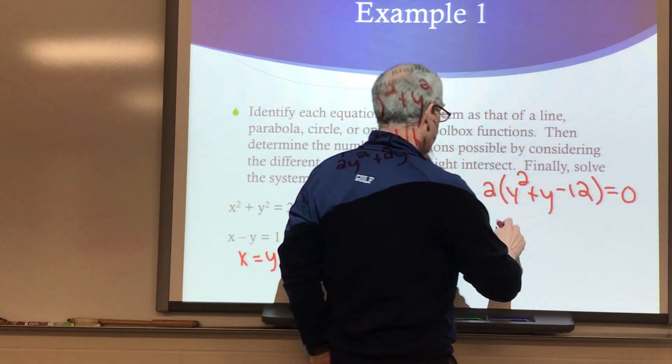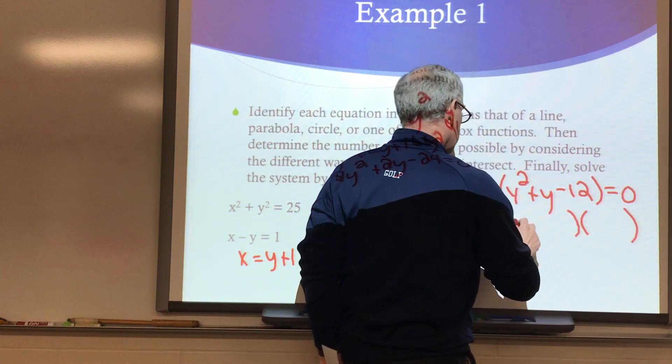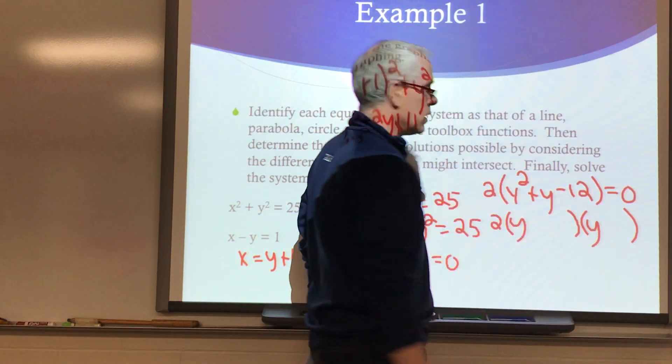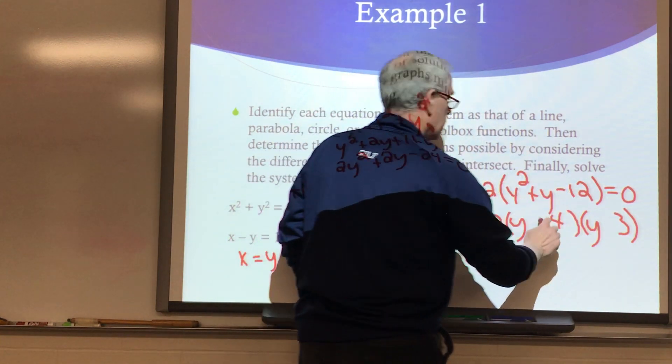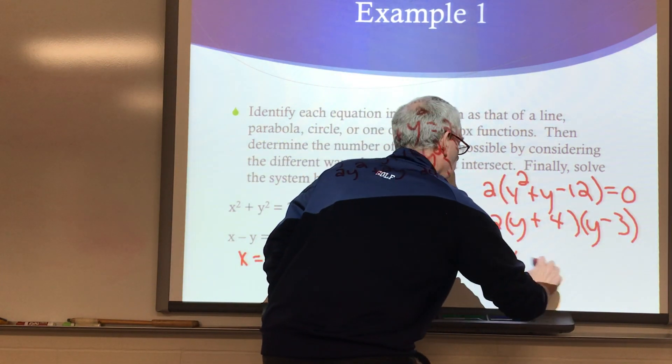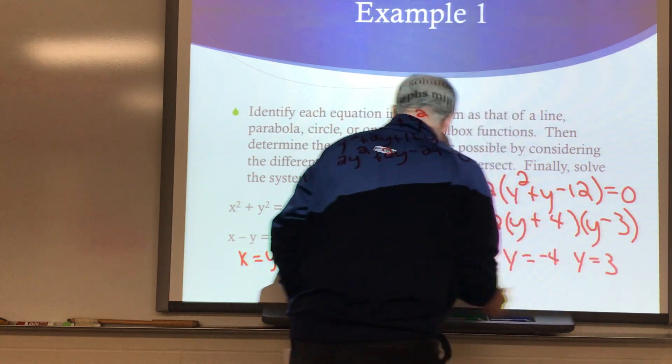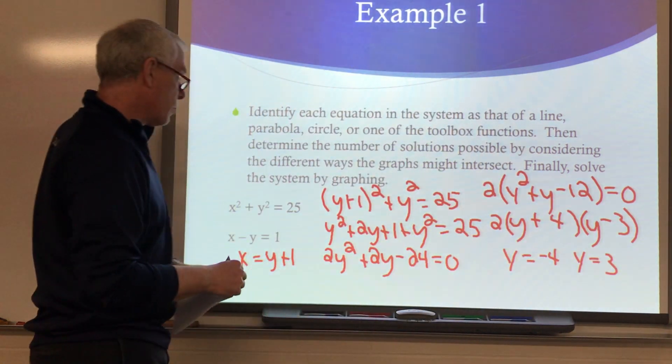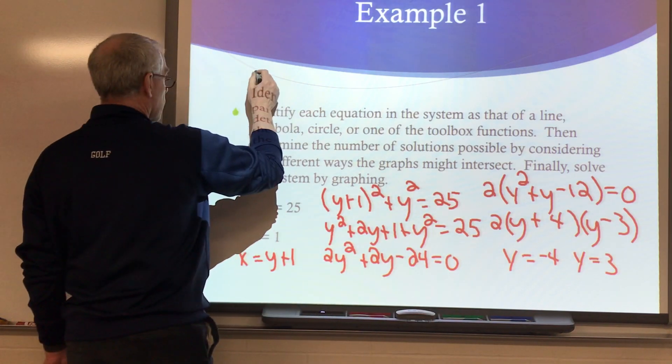Simplifying and getting 0 on one side. So I have 2y² + 2y - 24 = 0. I can factor a 2 out of all of those, so I'm left with y² + y - 12 = 0. Now I can factor that. I'm looking for numbers multiply to 12 and subtract to 1. Well, that would be 4 and 3. I need a positive 1 there, so I think initially y could be -4 or y could be 3.